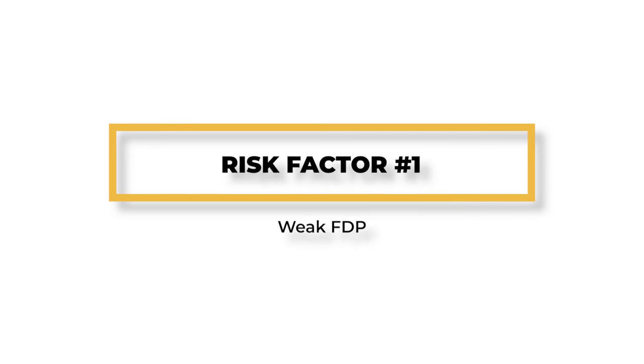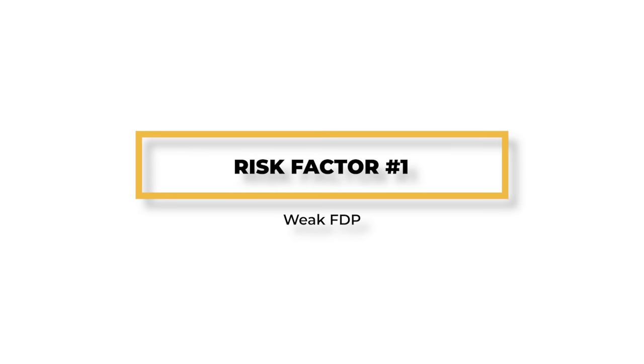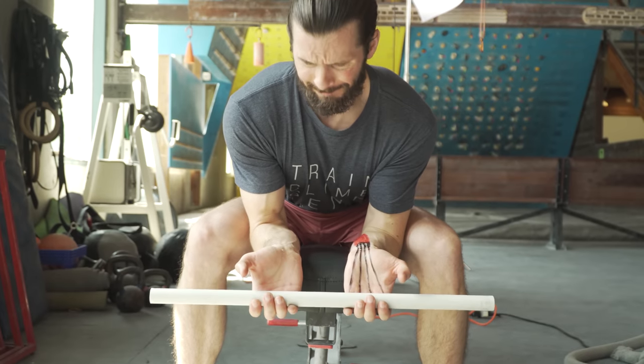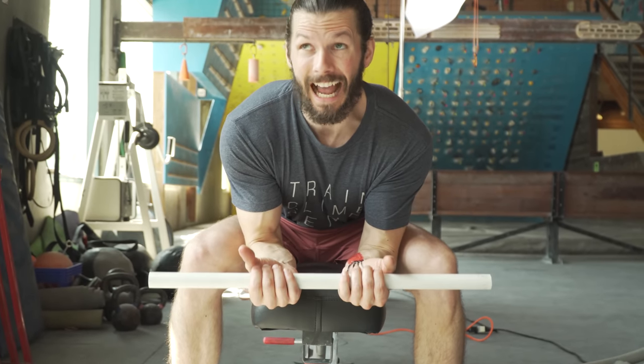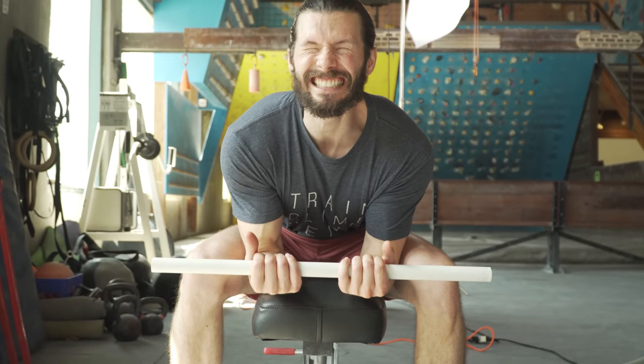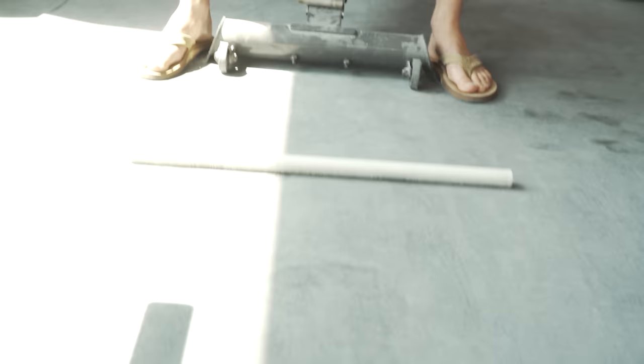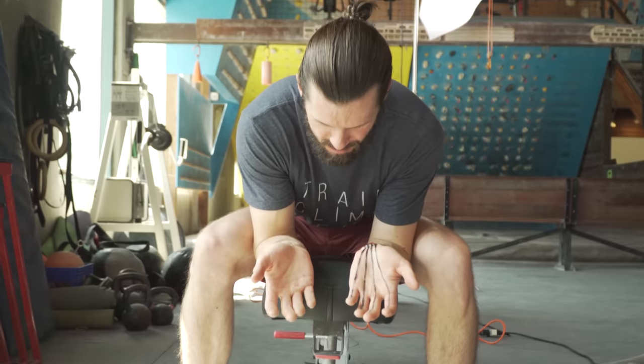There are three main anatomical traits or risk factors that can make your FDP more prone to injury. The biggest anatomical risk factor is a direct lack of strength of the FDP muscles themselves. This makes them more prone to injury due to an inability to handle the strain and stress placed upon them while climbing.